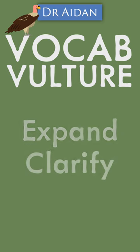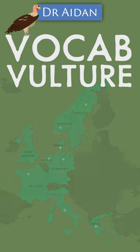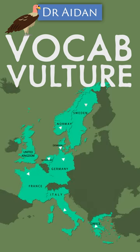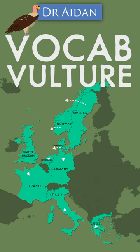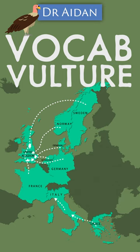English has been created by absorbing and changing words from many different places, including Scandinavia, Germany, the Netherlands and France, as well as words drawn from Latin and Greek, which is one of the reasons that we have so many different types of words to choose from and so many different pronunciations.